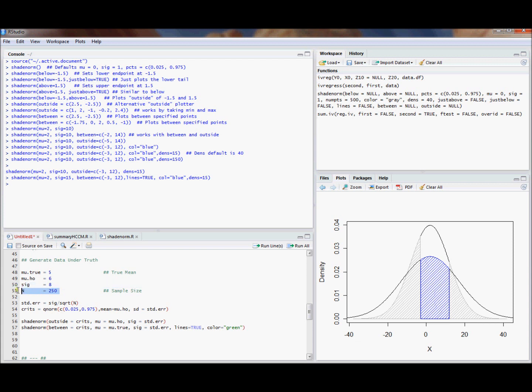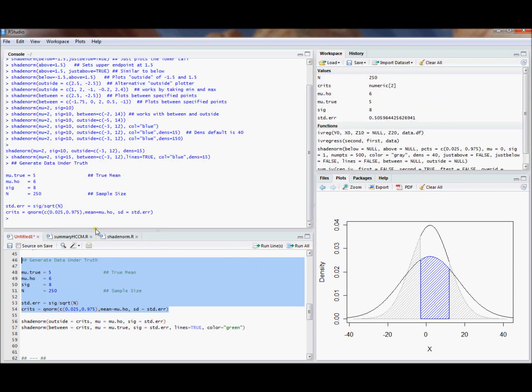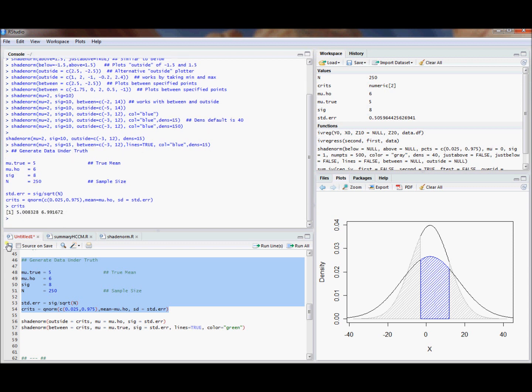That's going to give us approximate critical values under an assumption of normality, which isn't so bad because our sample size is 250. That's going to be our hypothesis test. In case you're interested, the critical values are going to be 5.0 and 6.99.